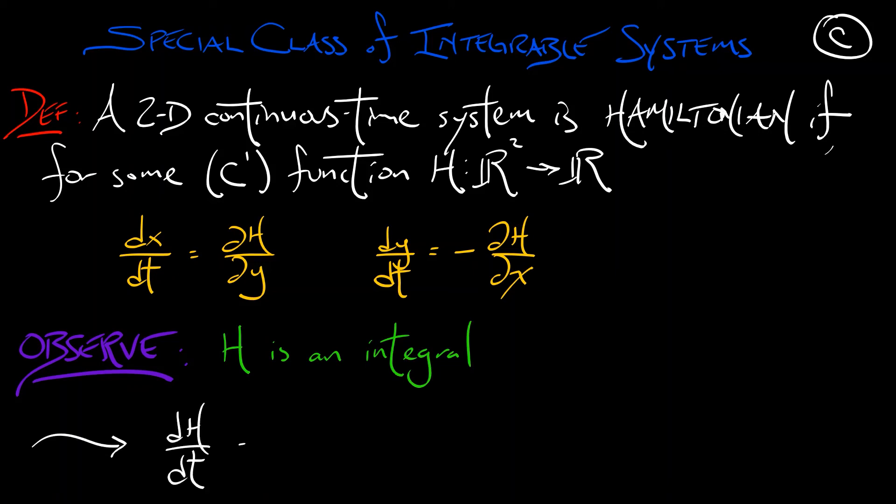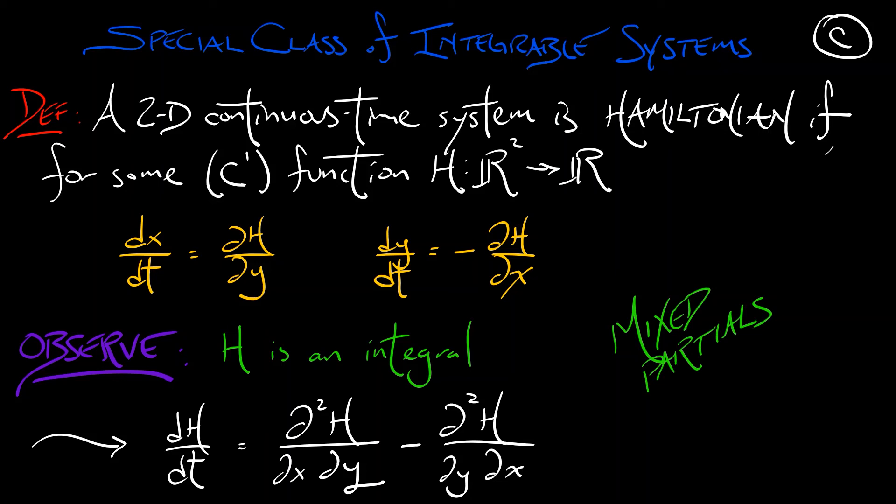Well, observe such an h is an integral for this system. I'm going to leave it to you to compute dh/dt. Plug in these values. And what you're going to find is that you get the second partial in h with respect to y first, then x, minus the second partial in h with respect to x first, then y. Using the fact that mixed partial derivatives commute gives us zero.